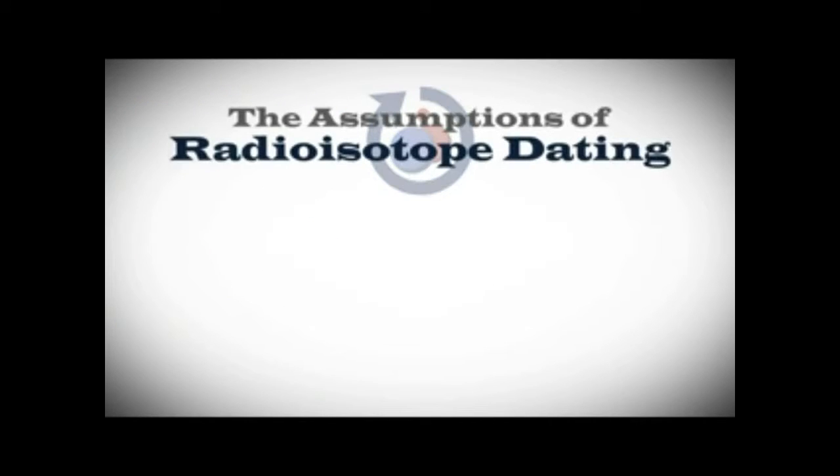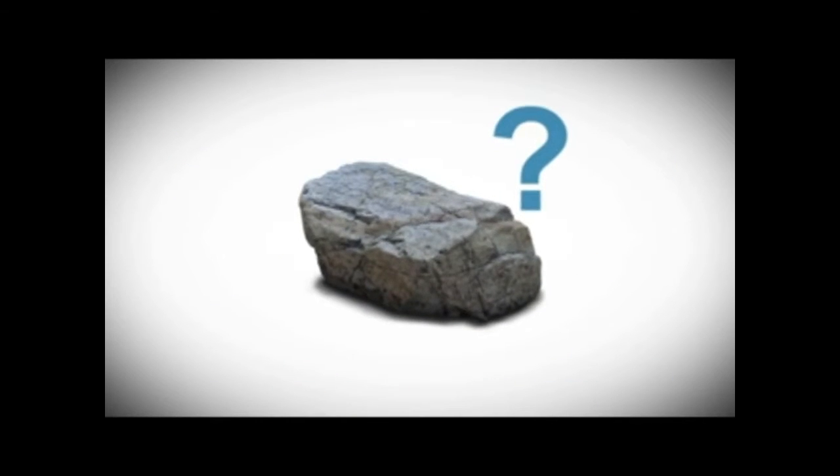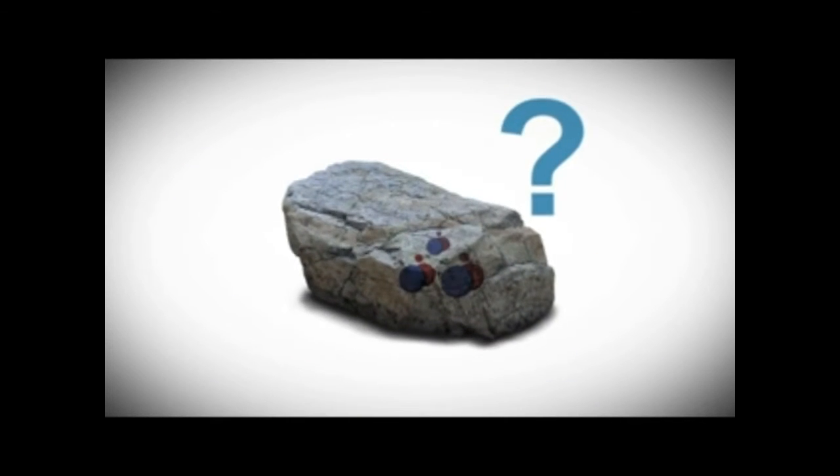So how can we know which method to trust? Measuring isotopes is very accurate, but the assumptions needed to convert those measurements into ages can't be verified. After all, how can anyone today verify how much of each isotope was in a rock or fossil when it formed long ago, or that no isotopes entered or left?